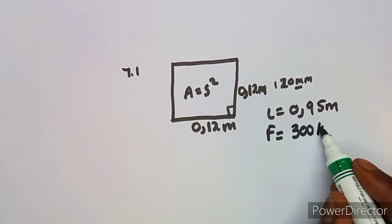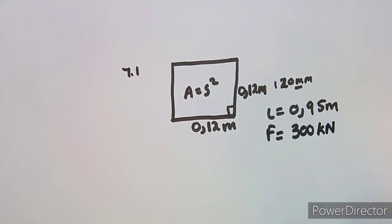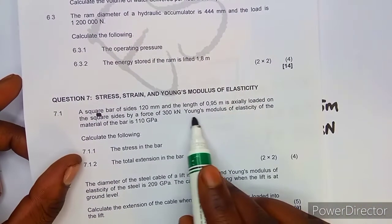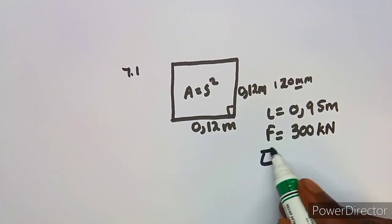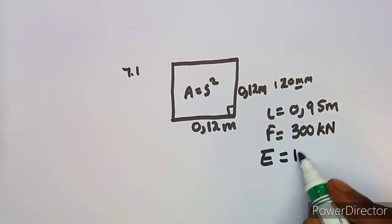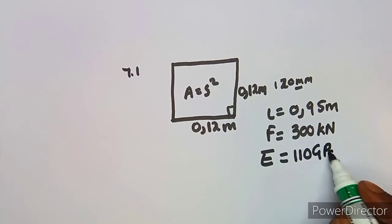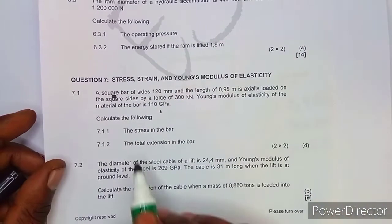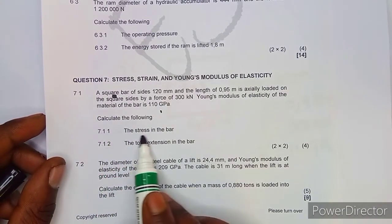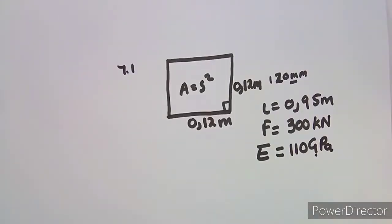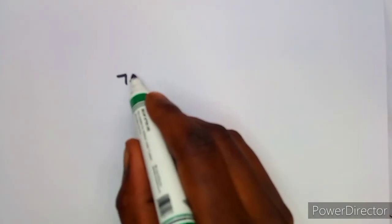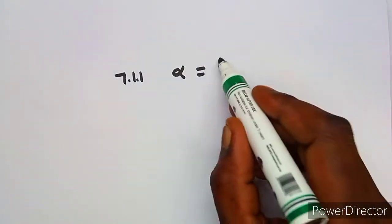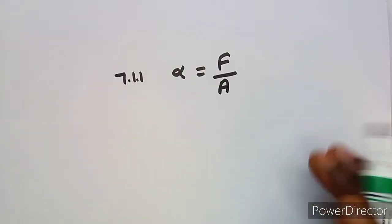Remember, kilo is 10 to the power 3. We are given the Young's modulus of elasticity, E, which is 110 gigapascals — giga is 10 to the power 9. The first part, question 7.1, asks us to calculate the stress in the bar. The formula for stress is force over area.